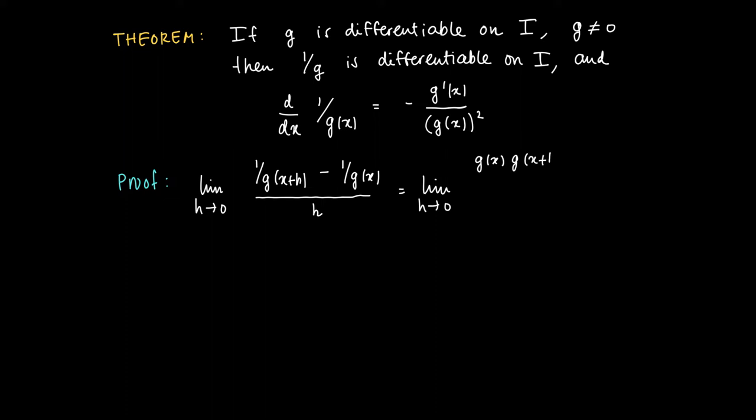So this limit equals the following limit where we multiply the numerator and denominator by g(x) times g(x+h). So we get g(x) times g(x+h) divided by g(x+h) minus g(x+h) divided by g(x) and divided by h times g(x)g(x+h). Well, the fact that we may divide by g(x) times g(x+h) is because g is supposed to be non-zero on the interval I.